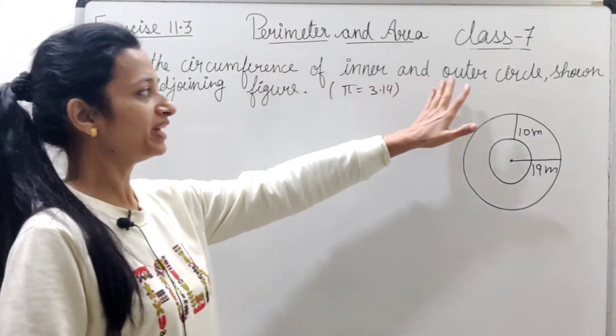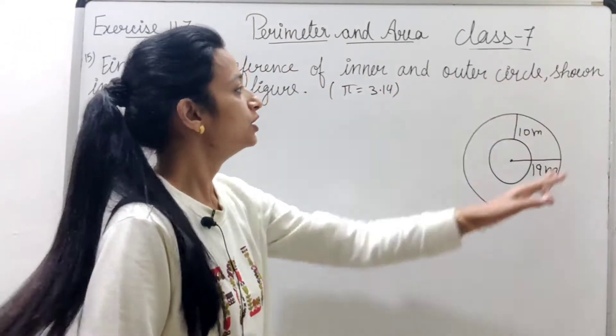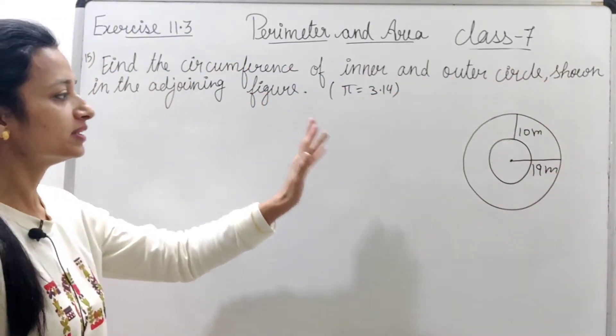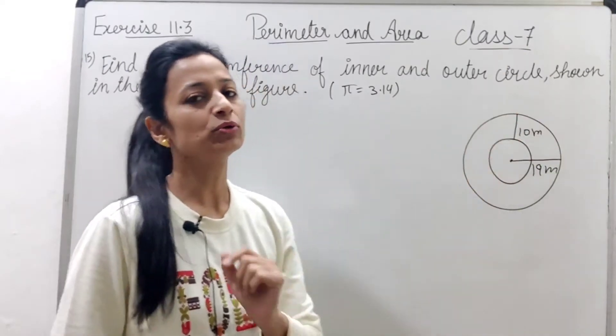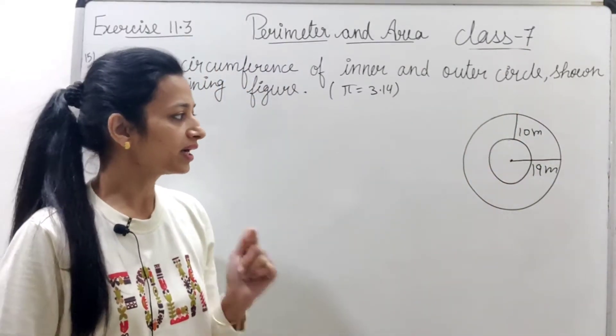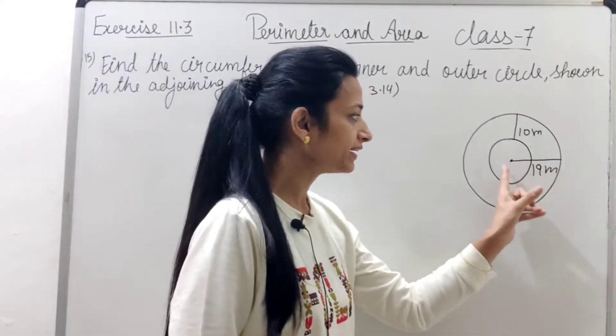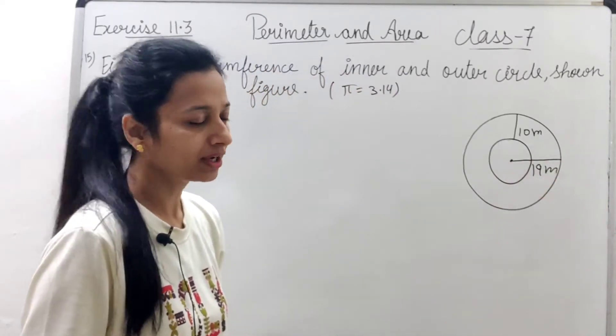The question is: Find the circumference of inner and outer circles shown in the adjoining figure. This figure is given with some values. What is given? The outer circle is given. Suppose,